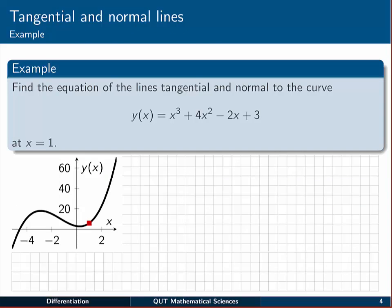Let's try this out with this example. We're asked to find the equation of the lines tangential and normal to the curve y(x) = x³ + 4x² - 2x + 3. That's the black curve shown in the figure here. We're asked to find these lines specifically at x = 1.